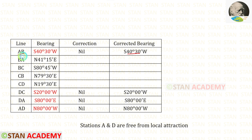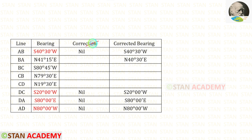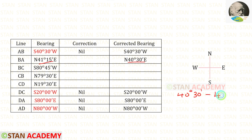The correct fore bearing AB is known, so we can find the back bearing BA. In reduced bearing, the fore bearing and back bearing have the same value but different directions. So the back bearing BA is also 40 degrees 30 minutes, but its direction will be north-east. The correction applied for BA is 40 degrees 30 minutes minus 41 degrees 15 minutes, giving negative 45 minutes. Since it is a clockwise reading and the correction is negative, the correction is in the anti-clockwise direction.